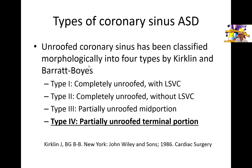As for the types of coronary sinus ASDs, a classification has been described by Kirkland and his group. Type one is a completely unroofed coronary sinus with a persistent left superior vena cava. Type two is a completely unroofed coronary sinus without a persistent left superior vena cava. Type three is a partially unroofed mid portion, and type four is a partially unroofed terminal portion — which is what we saw in our patient.